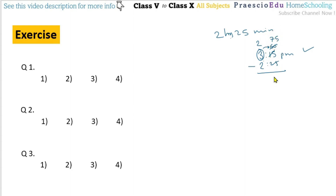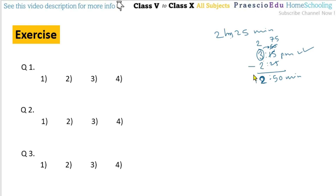Now 75 minus 25 is 50 minutes, and 2 minus 2 is 0 hours. Since 0 hours in the afternoon means we are starting from 12 noon, after 12 o'clock the clock starts from 0 — after 1 hour it shows 1 pm, after 2 hours it shows 2 pm. So the answer is 12 hours and 50 minutes.